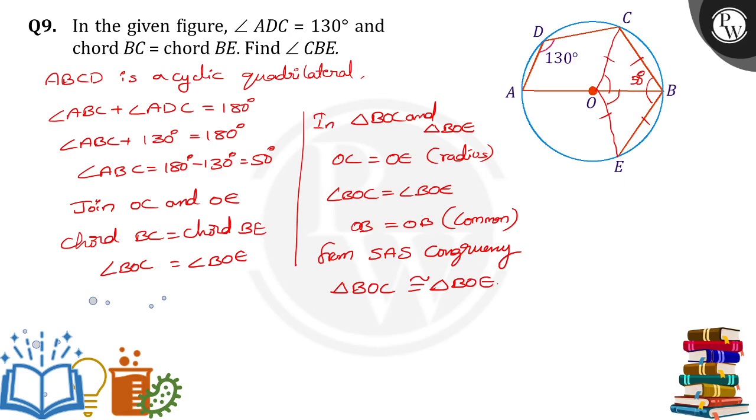When these two triangles are congruent, angle OBC equals angle OBE, and they are equal to 50 degrees. We need to find angle CBE, which equals angle OBC plus angle OBE, that is equal to 100 degrees. Thank you.